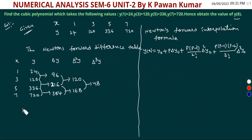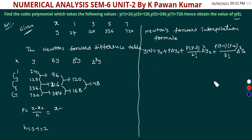Here p = (x − x₀)/h, where h = 3 − 1 = 2. x₀ is the first value, x₀ = 1. The values are: y₀ = 24, Δy₀ = 96, Δ²y₀ = 120, Δ³y₀ = 48.